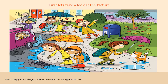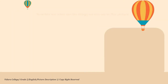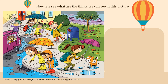First, let's take a look at the picture. Now let's see what are the things we can see in this picture. Observe the picture carefully. Then you can start to list out the things that you can see in this picture.